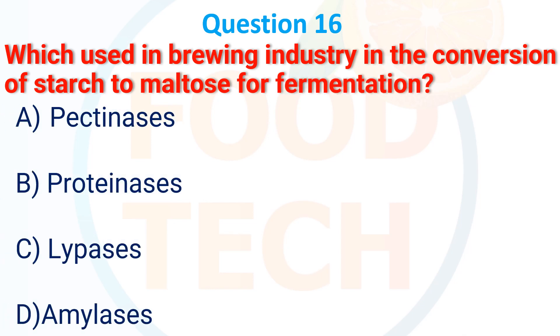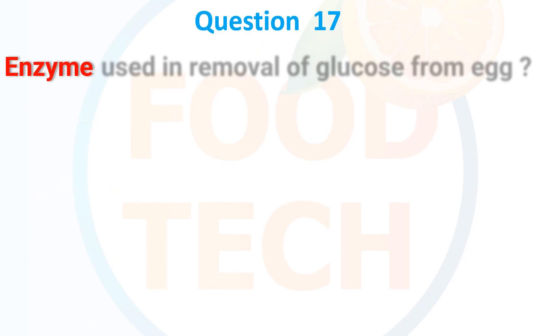Which enzyme is used in the brewing industry in the conversion of starch to maltose for fermentation? A. Pectinases, B. Proteinases, C. Lipase, D. Amylases. The answer is D. Amylases. Enzyme used in the removal of glucose from egg: A. Glucosidase, B. Alpha-glucosidase, C. Glucosidase, D. Beta-glucosidase. The answer is C. Glucosidase.